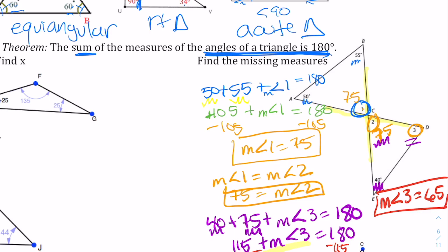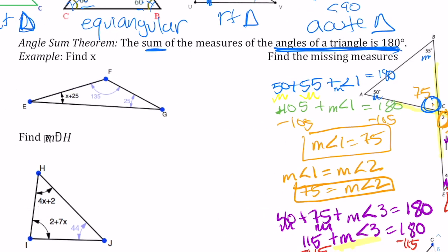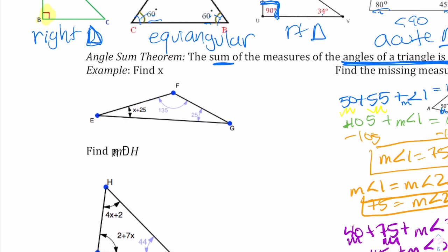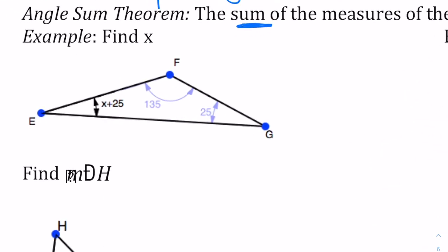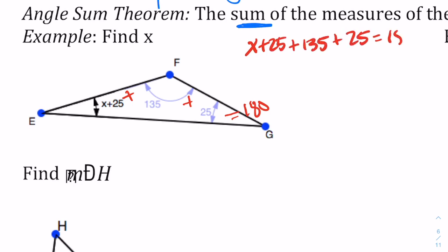Now we have all three missing measures in this diagram with two sets of triangles. Going to the left triangle, we've got three pieces of information: angle F is 135 degrees, angle G is 25 degrees, and angle E is X plus 25. All three angles must equal 180 degrees.